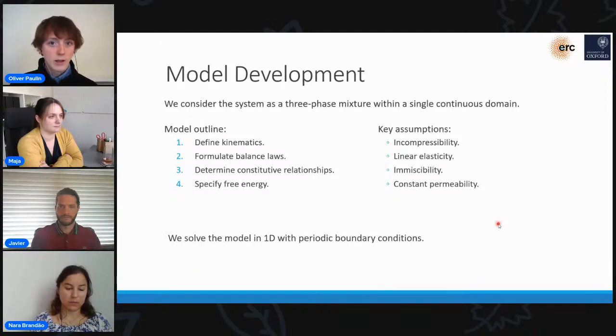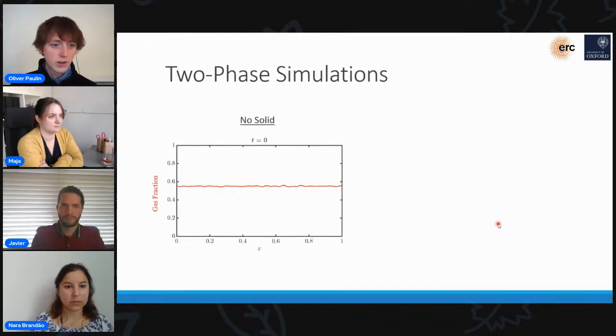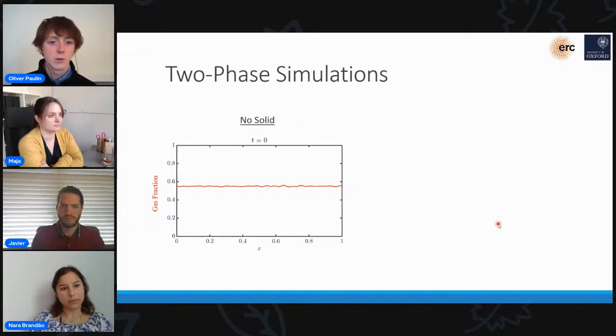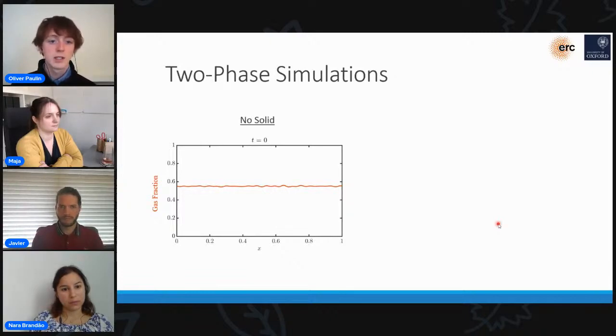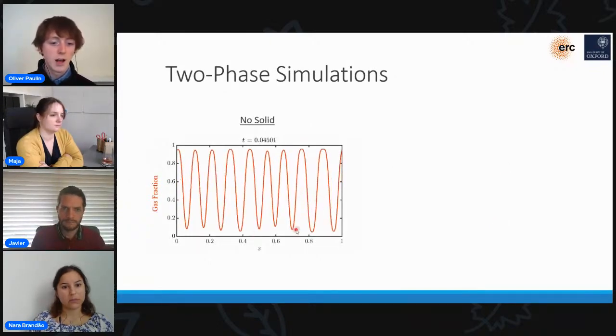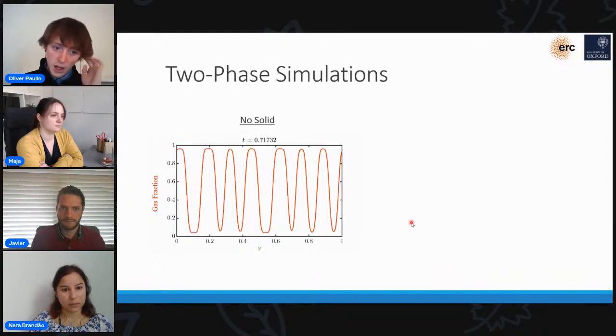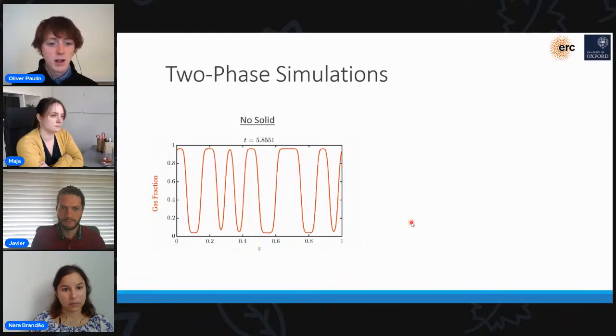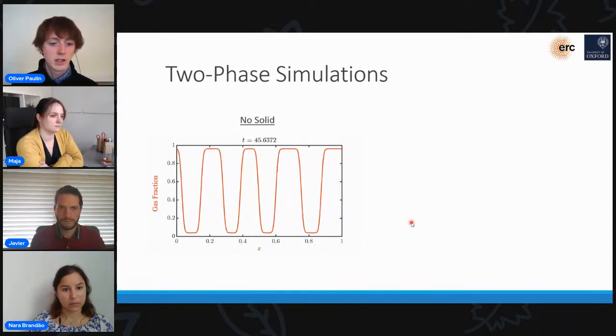By specifying this free energy, we complete the system and have a complete system of equations, which we can just solve numerically. For simplicity, we're going to start by just thinking about this in a 1D system with periodic boundary conditions to see what happens. Before I dive straight into the full three-phase simulations from our model, I'll start by considering a couple of two-phase simplifications just to help us get a bit of intuition for what's going on here. So to start with, we'll consider the case where there's no solid in the system. So we've just got gas and liquid in an unconstrained domain. So we'll start our simulation with an almost homogeneous mixture of gas and liquid. And what we see is that the gas and liquid separate into these distinct gas-rich and liquid-rich domains, which coarsen over time. This is the behavior we expect to see. It's typically described by a Cahn-Hilliard-type equation. And yeah, it's just phase separation in an unconstrained medium.